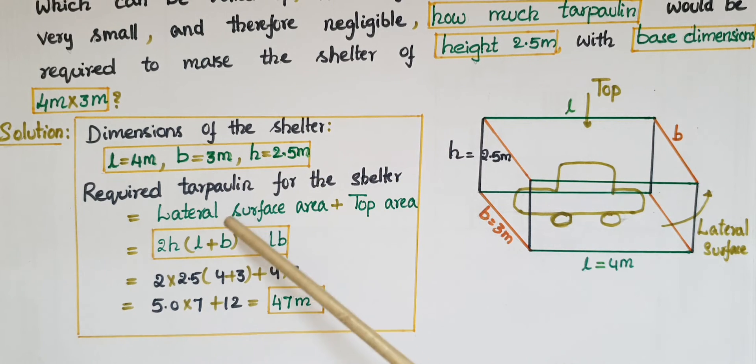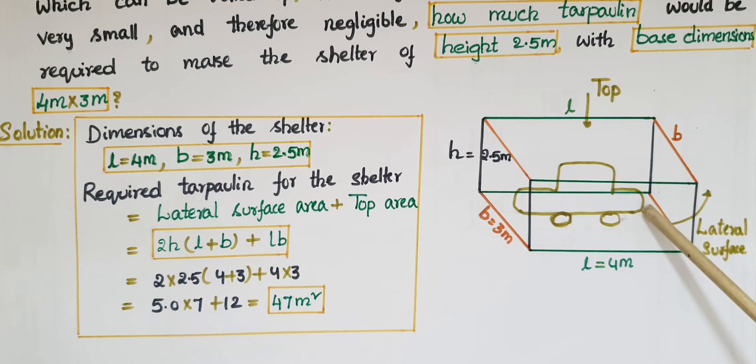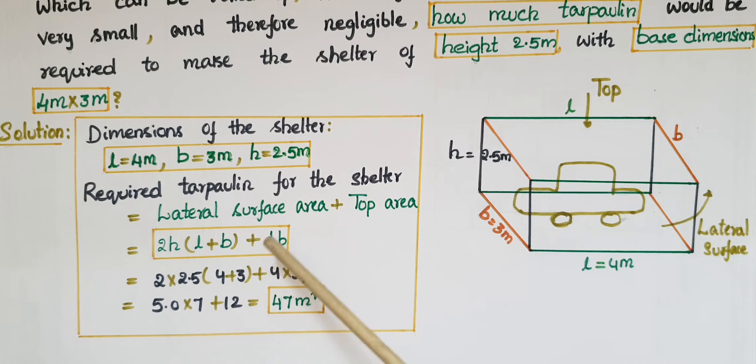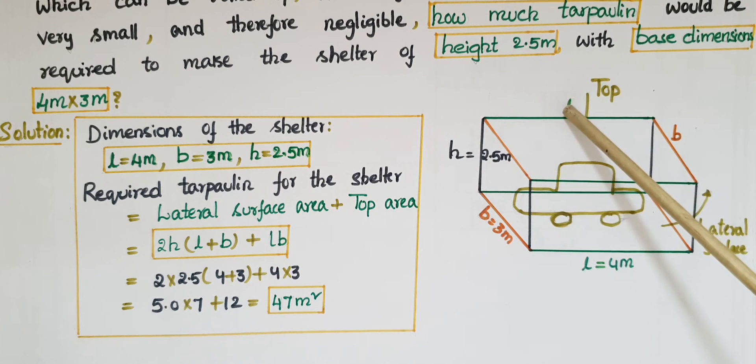Required tarpaulin for the shelter is equal to, here it is covered the four sides that means lateral surface area plus top area. So lateral surface area, it is looking like a cuboid. So lateral surface area of cuboid is 2H into L plus B plus top area.